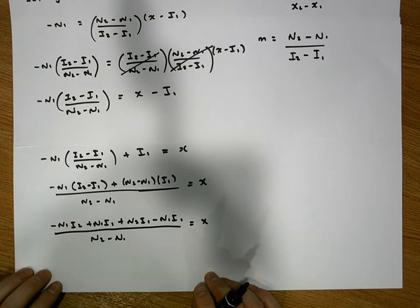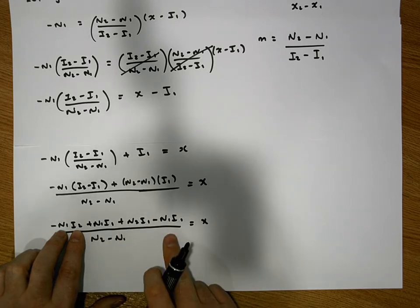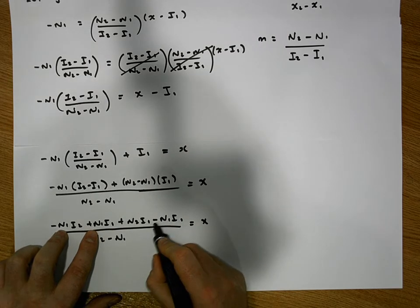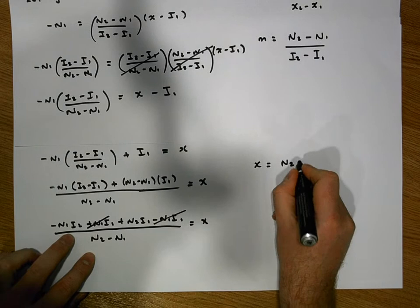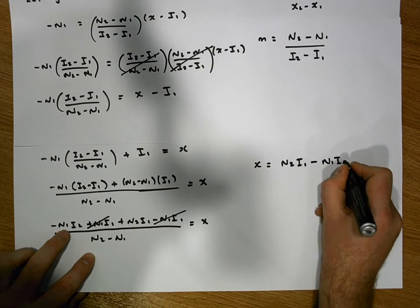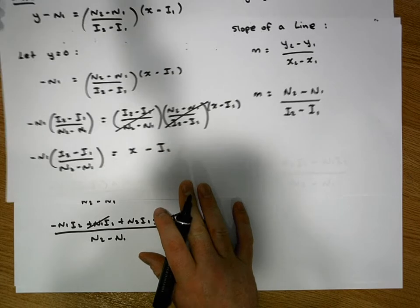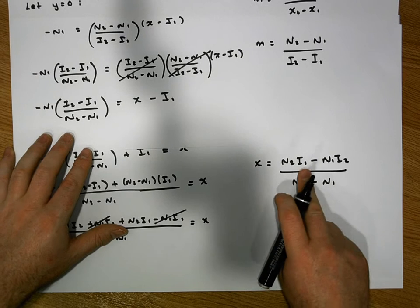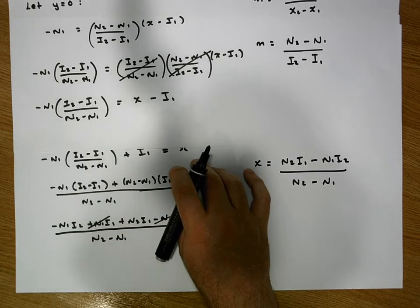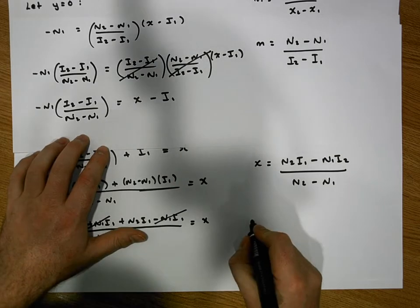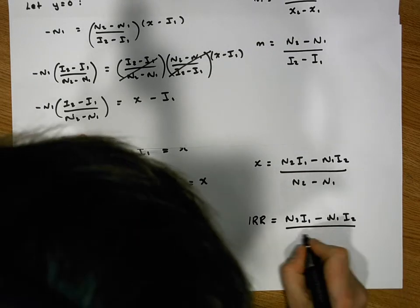We can see that +n1·i1 and −n1·i1 cancel out, leaving us with x = (n2·i1 − n1·i2) / (n2 − n1). So when y equals zero — i.e., net present value equals zero — x equals (n2·i1 − n1·i2)/(n2 − n1), and this x is the internal rate of return. The IRR formula is: IRR = (n2·i1 − n1·i2) / (n2 − n1).